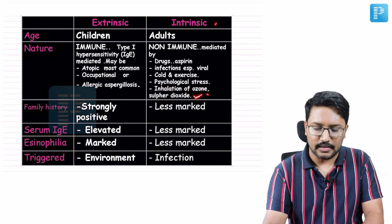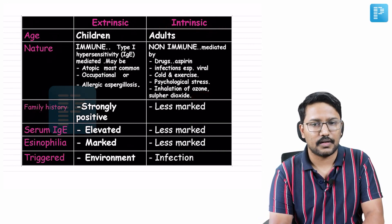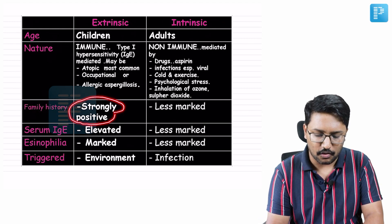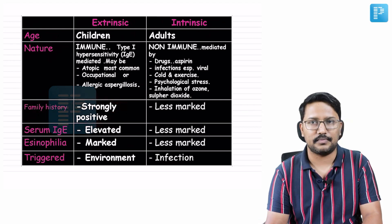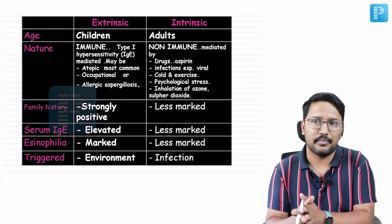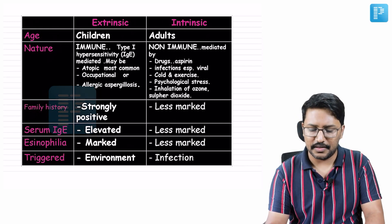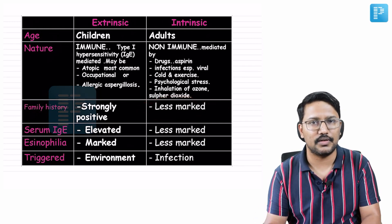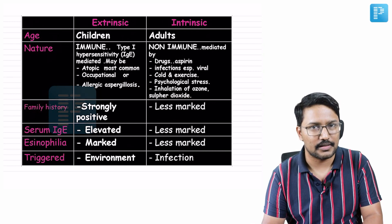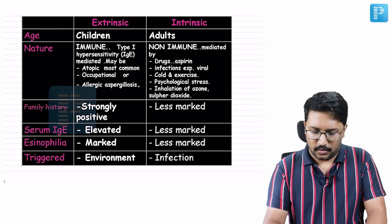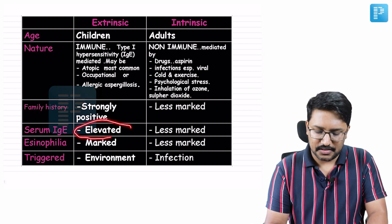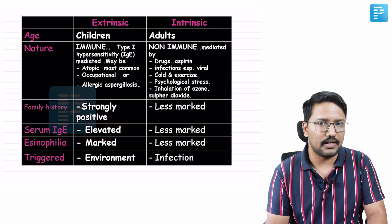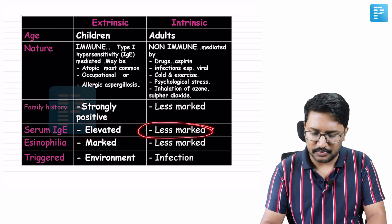Regarding family history: extrinsic asthma has a strong family history — atopy and asthma run in the family. In intrinsic asthma, family history is less relevant. For serum IgE levels, extrinsic asthma will show elevated IgE, while in intrinsic asthma IgE elevation may be present but less marked.